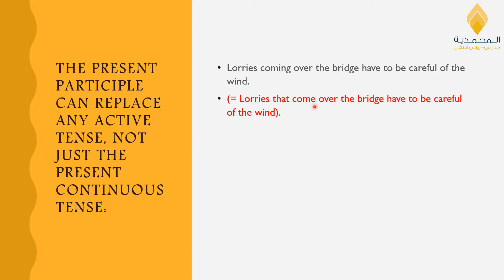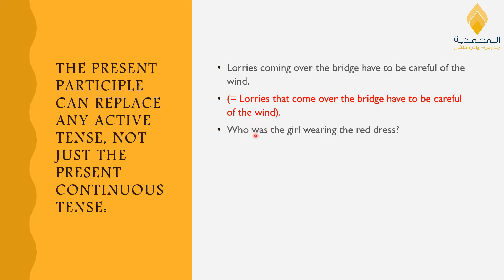Let's look at another sentence: 'Who was the girl wearing the red dress?' The present participle is 'wearing.' Here we've used the past simple. The relative clause version is: 'Who was the girl who was wearing the red dress?'